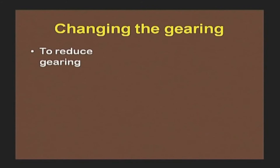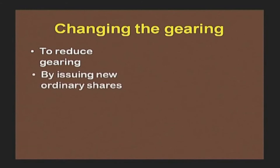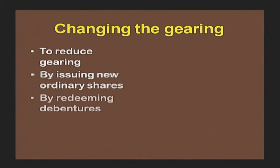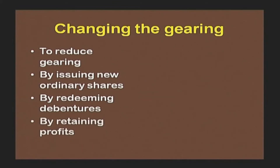To reduce gearing, we need to issue ordinary shares so funding is based on equity rather than borrowings, or by redeeming debentures. If we redeem debentures, the debt obligation falls, fixed interest charges become lower, and profits are available on a higher side. Retaining profits can also create a change in the gearing ratio.